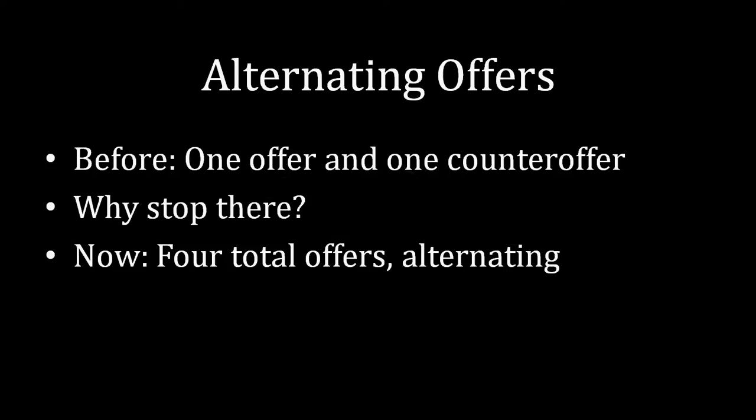If you remember, two lectures ago we had Albert making an initial offer and then Barbara with the ability to reject that initial offer and come up with a counteroffer of her own. Well, we're essentially expanding on that now. Rather than having just one offer and one counteroffer, why not go a little bit further? Why not have four total offers where we're going to have the parties alternate back and forth?